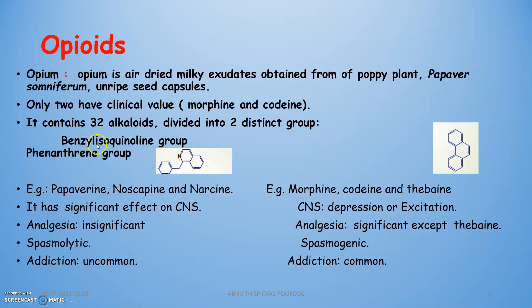In the benzylisoquinoline group we have papaverine, noscapine, and narceine. In the phenanthrene group we have morphine, codeine, and narceine. Addiction is common with the phenanthrene group — morphine and codeine. Analgesia and spasmolytic action are present in the benzylisoquinoline group, including papaverine and noscapine.